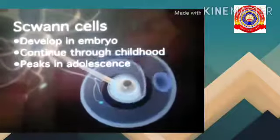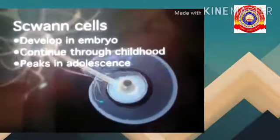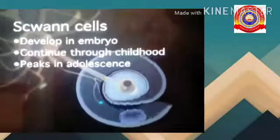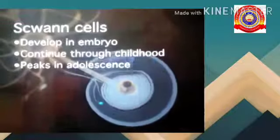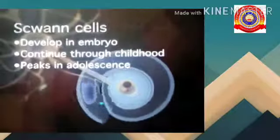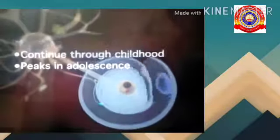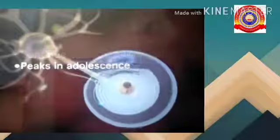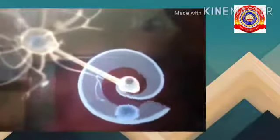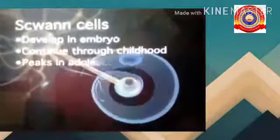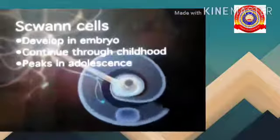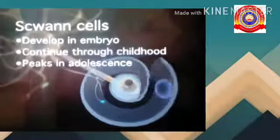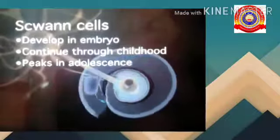This axon is repeatedly encircled by a sheath called Schwann cells — you can see this in the video. It encircles not one or two times, but many times it encircles the axon.